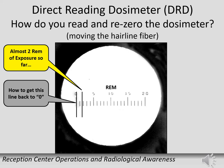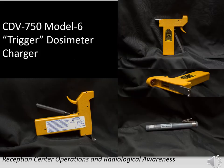Looking through the eyepiece into a light source, the scale of the direct reading dosimeter runs from 0 to 20 rem. To track your radiation exposure, hold the dosimeter up to a light source and read where the line crosses the scale — that is your exposure. Prior to use, the dosimeter is re-zeroed using the trigger charger to ensure there is available space to receive the allowed exposure.